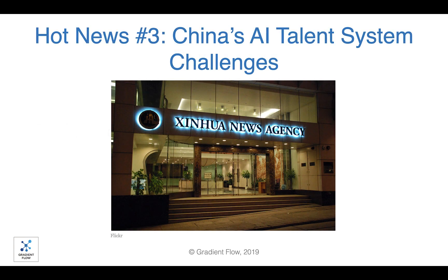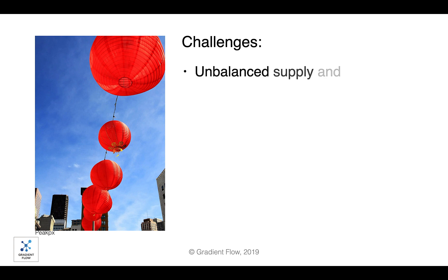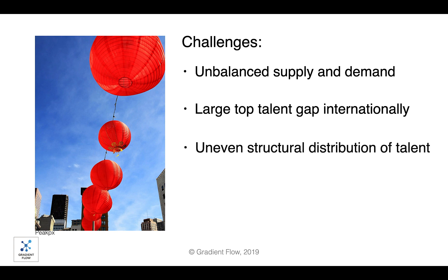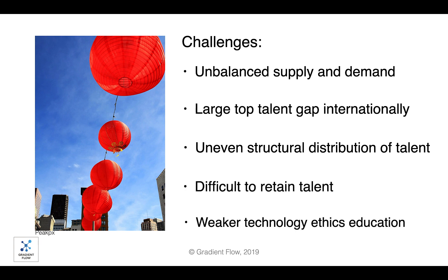A recently translated article from China's state news agency Xinhua examines five challenges to China's AI talent system. First, the total supply of talent is critically insufficient. Second, there's a large gap between China's top talent and that of the U.S. and other countries. Third, most of China's top talent is in universities and research institutions, not industry. Fourth, China has a severe brain drain of AI talent to other countries. Lastly, there's a dearth of technology ethics education.